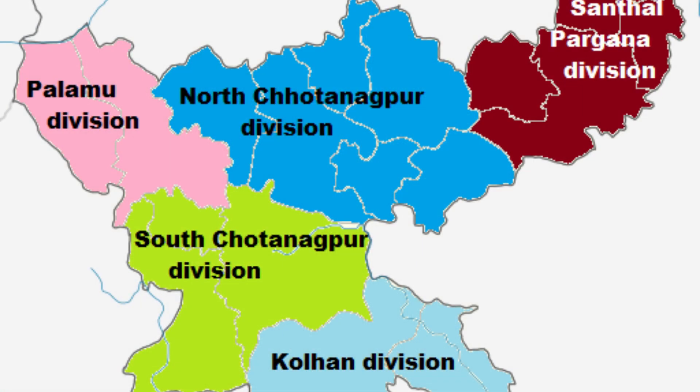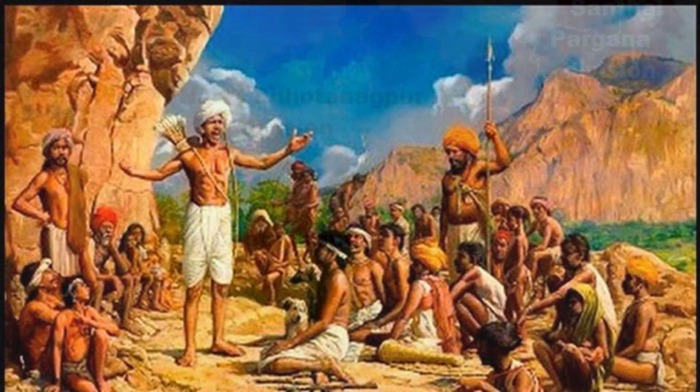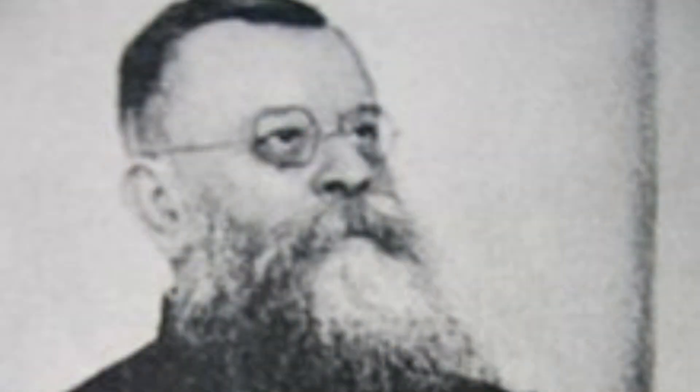The areas of North Chotanagpur, South Chotanagpur, and Palamau divisions are included in the jurisdiction of the CNT Act. The Chotanagpur Tenancy CNT Act of 1908 came as a response to the Birsa movement. John Hoffman, a missionary social worker, was responsible for the creation of the blueprint of the Act.